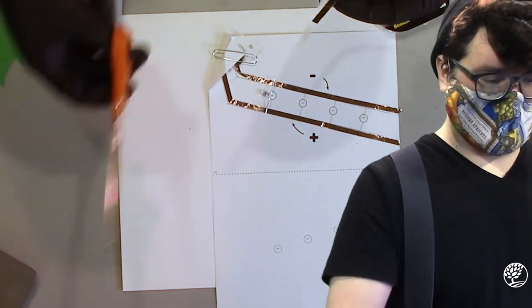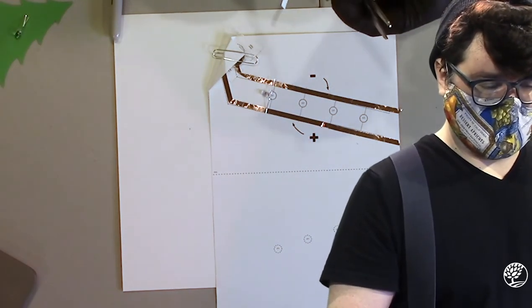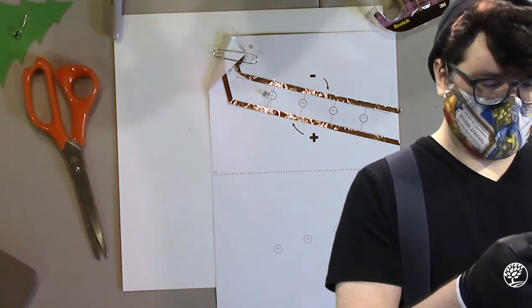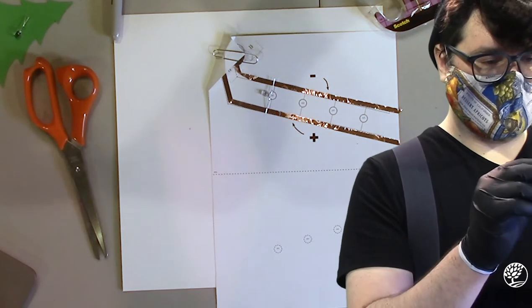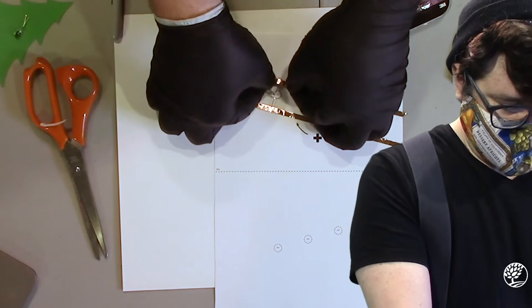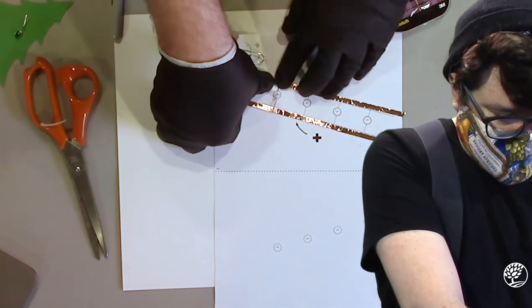Now we're going to attach the LEDs to the traces at the locations indicated on the template by using the remaining copper tape. I find that it works best to have the leads across the copper traces and tape each of the LEDs down to the trace with a small piece of copper tape. I then use clear tape to secure the entire thing to the card.